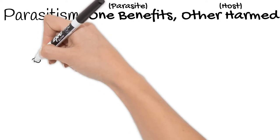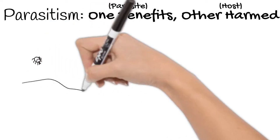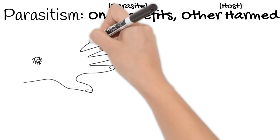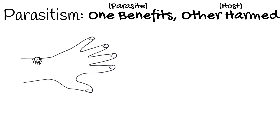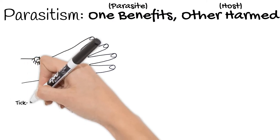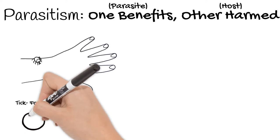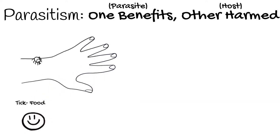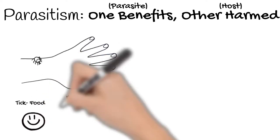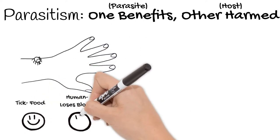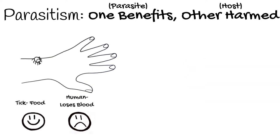An example is a tick and any warm-blooded animal they feed on, including us. The blood is the tick's food, which they need to live, but we lose blood we need. We are harmed from the loss of blood.